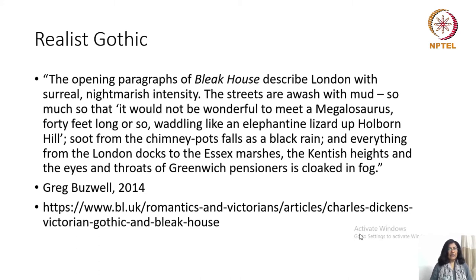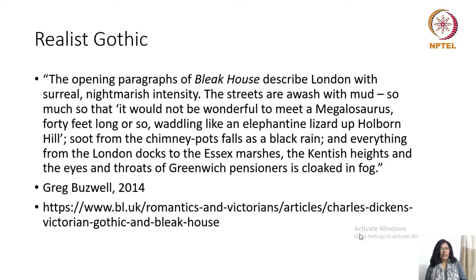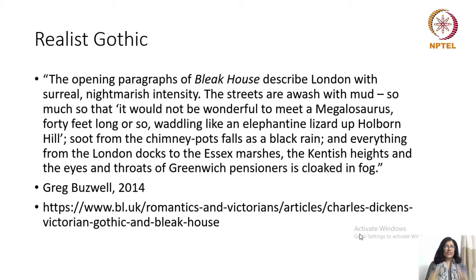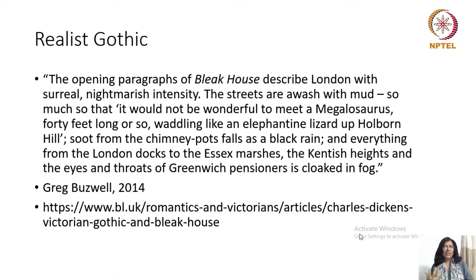The opening paragraphs of Bleak House describe London with surreal, nightmarish intensity. The streets are awash with mud, so much so that it would not be wonderful to meet a megalosaurus, 40 feet long or so, waddling like an elephantine lizard up Holborn Hill. Soot from the chimney pots falls as black rain, and everything from the London docks to the Essex marshes, the Kentish heights, and the eyes and throats of Greenwich pensioners is cloaked in fog. The description is surreal — it is nightmarish, it is Gothic. Gothic in the sense that it is dark, full of horror, quiet horror, quiet desperation.